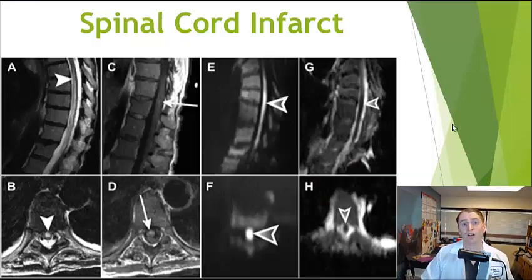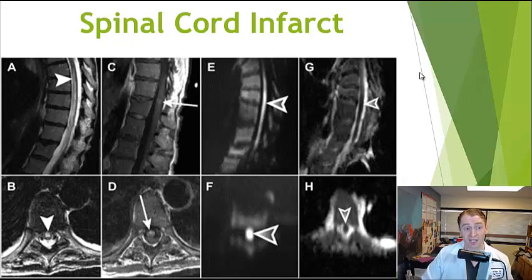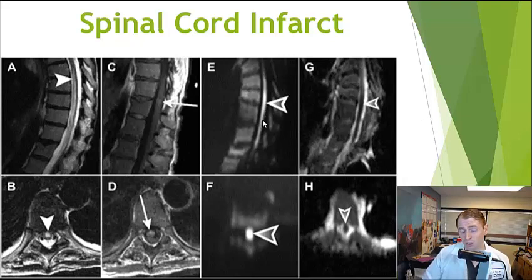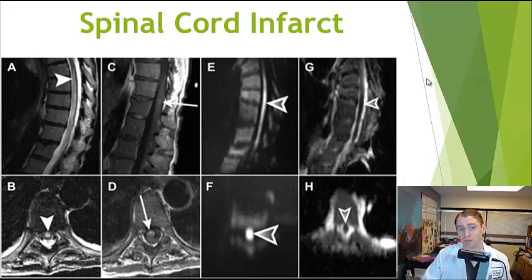Not every spinal cord lesion is transverse myelitis, and misdiagnosis can occur. A spinal cord infarct or stroke of the spine is rare but can occur, particularly in older people with vascular risk factors such as diabetes and hypertension, or after procedures like aortic surgery or bronchial angiogram. Diffusion-weighted imaging on MRI can prove this is a stroke. It's important to make a correct diagnosis because plasmapheresis can temporarily drop blood pressure, which could worsen a stroke.